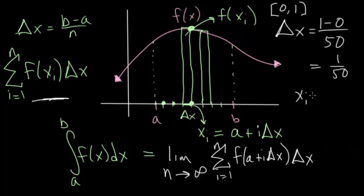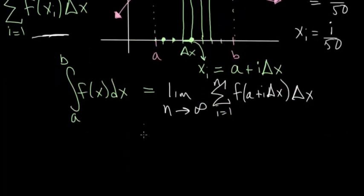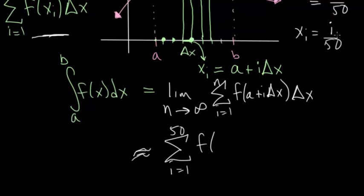And x sub i in this case is just going to be a, the starting value of the region which is 0, plus i times Δx, and Δx is 1 over 50. So x sub i is just i over 50. And essentially what our sum simplifies to—and we have an approximation to this definite integral because we're not taking a limit here—but our approximation is essentially going to be this sum from i equals 1 to 50 of f(x_i), but that's i over 50, times by Δx which we know is 1 over 50.